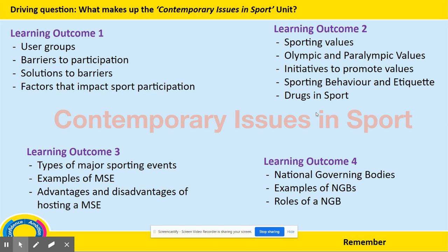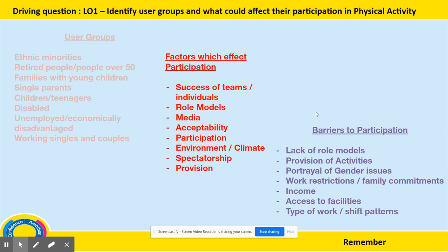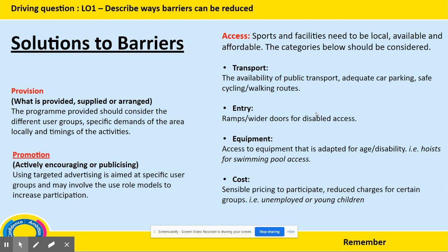This unit is split up into four different LOs. The first LO is all about user groups, factors which affect participation, and the barriers specific to those user groups. For example, a barrier to a child or teenager may be lack of income, yet a barrier to a disabled person may be lack of role models or lack of provision — which is essentially what's provided, supplied, or arranged in the local area. Finishing off LO 1, you will look at the solutions to these barriers, which are provision, promotion, and access.